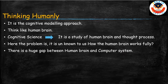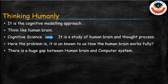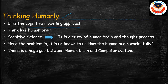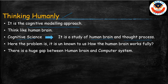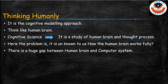The first one is thinking humanly. If a machine is thinking like a human, then we can say that machine has intelligence. Thinking humanly is a kind of cognitive modeling approach. Cognitive science is the study of the human brain and the thought process. So if a machine is thinking like a human, we can say that machine is intelligent.